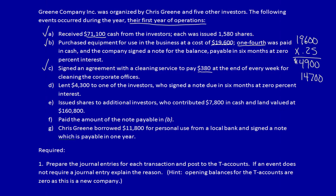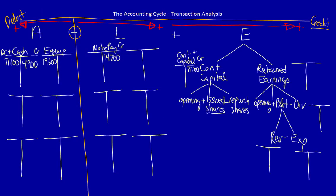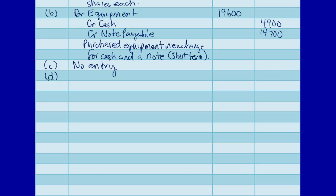Transaction D: lent $4,300 to one of the investors who signed a note due in six months at 0% interest. There was an exchange between two parties — it's realized and measurable — so this is a transaction and must be recorded. What did the company get? They got an IOU from an investor: a legal right to collect cash in the future, which is a note receivable. What did the company give away? They gave away cash — cash decreases. Notes receivable increase on the debit side; cash decreases on the credit side. Journal entry: debit note receivable, credit cash, plus explanation.